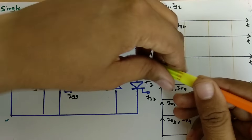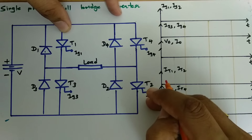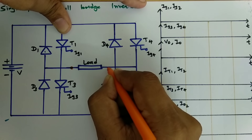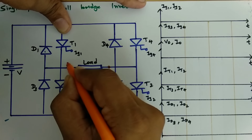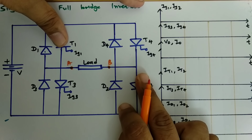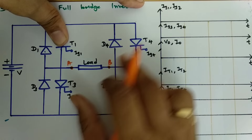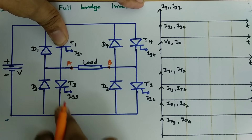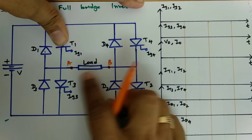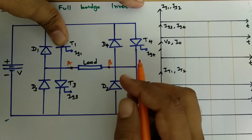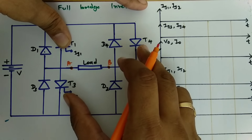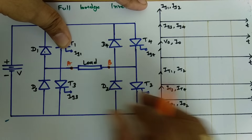I will be triggering T1 and T2 at the same time. When T1 and T2 are triggered, the positive terminal appears at terminal A and the negative terminal appears at terminal B, so terminal A is positive with respect to terminal B. If we trigger T3 and T4, then terminal B will be positive with respect to A, meaning negative voltage appears at the load.